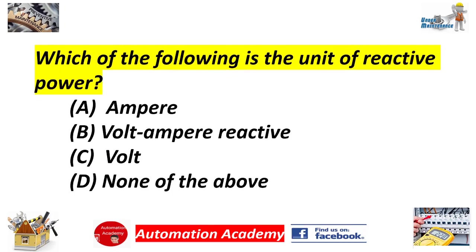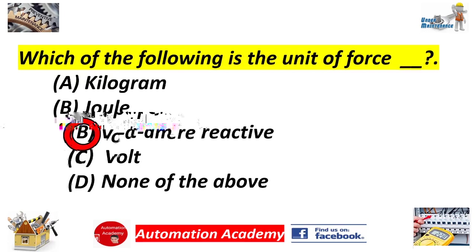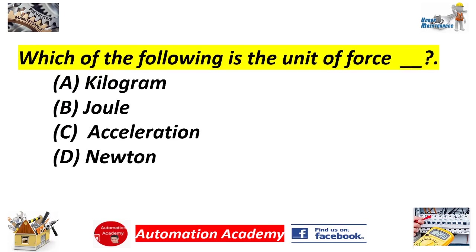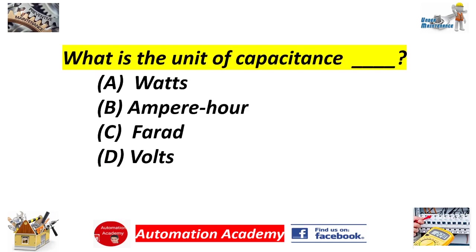Which of the following is the unit of reactive power? A. Ampere. B. Volt-ampere reactive. C. Volt. D. None of the above. Answer: B. Volt-ampere reactive. Which of the following is the unit of force? A. Kilogram. B. Joule. C. Acceleration. D. Newton. Answer: D. Newton. What is the unit of capacitance? A. Watts. B. Ampere hour. C. Farad. D. Volts. Answer: C. Farad.